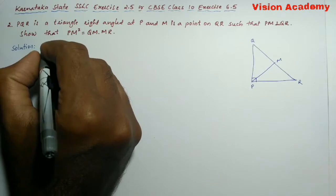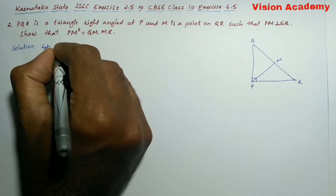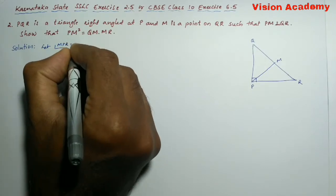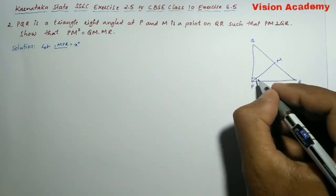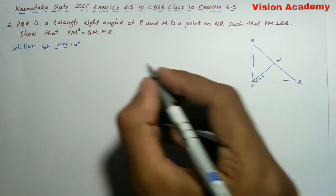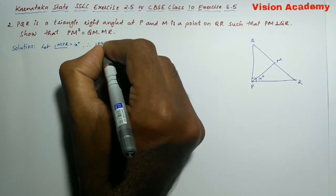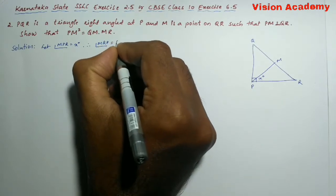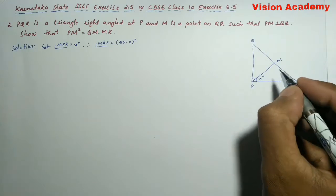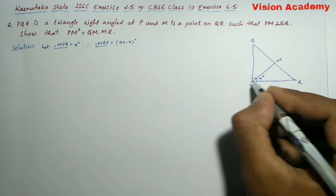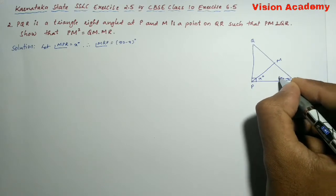Here let us say angle MPR is equal to X degrees. Then angle MPQ is 90 minus X degrees.